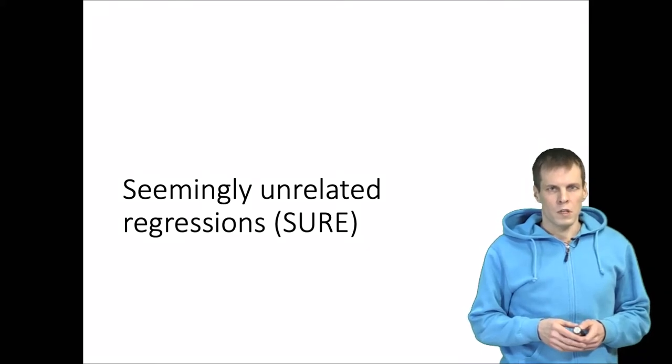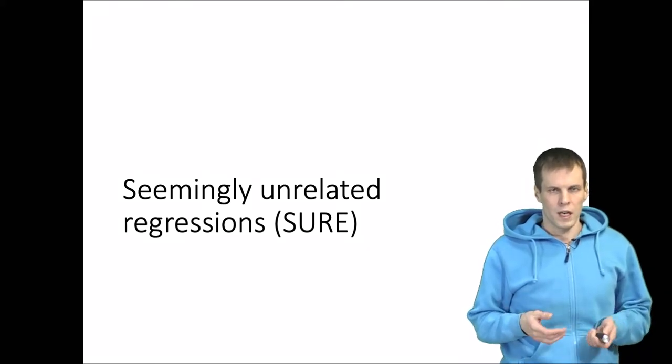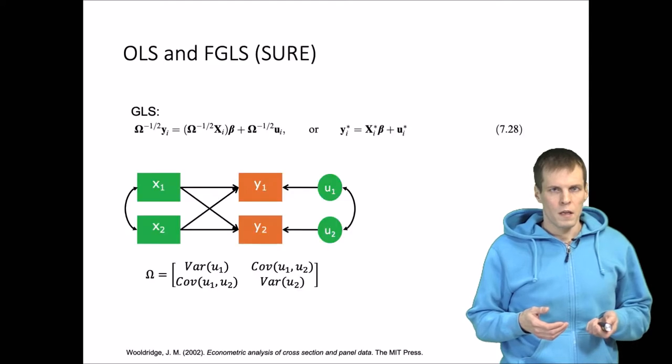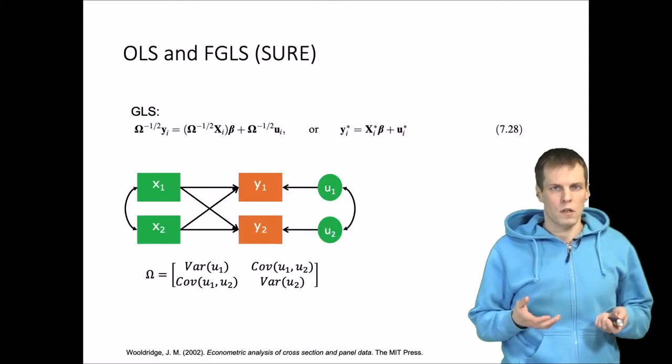Seemingly unrelated regressions is an older technique for estimating simultaneous equations. This technique belongs to the family of feasible generalized least squares.